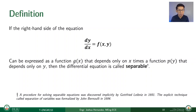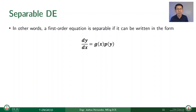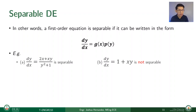A quick side note: a procedure for solving separable equations was actually discovered implicitly by Gottfried Leibniz in 1691. The explicit technique called separation of variables was then formalized by John Bernoulli in 1694, about three years later. In other words, a first-order equation is separable if it can be written so that we can segregate all functions related to x as g(x) and all functions in y as p(y).